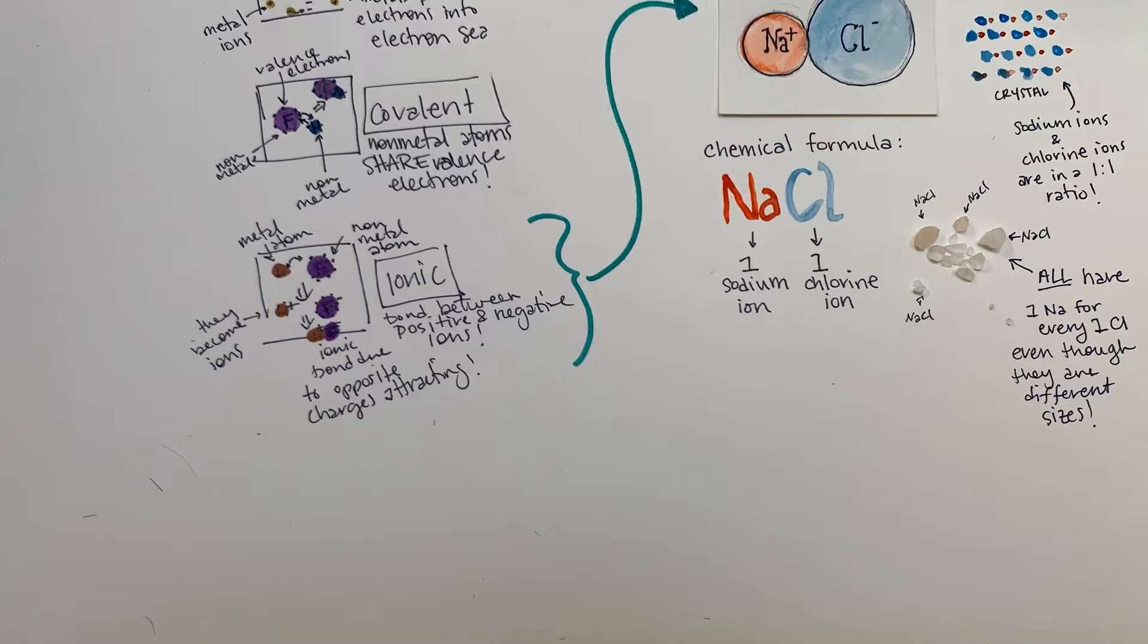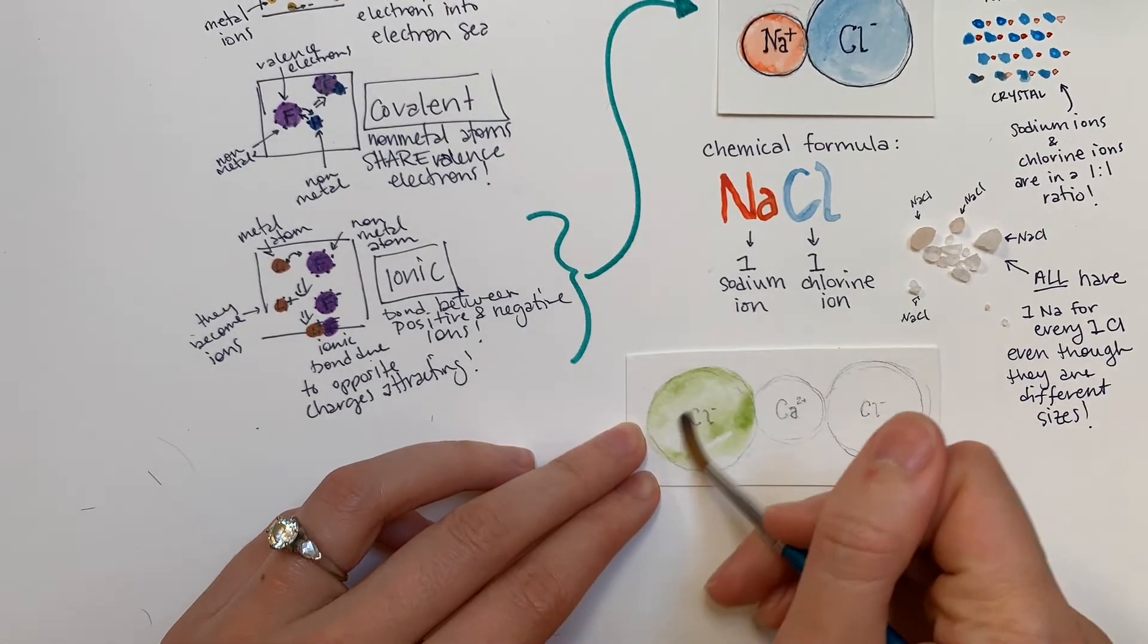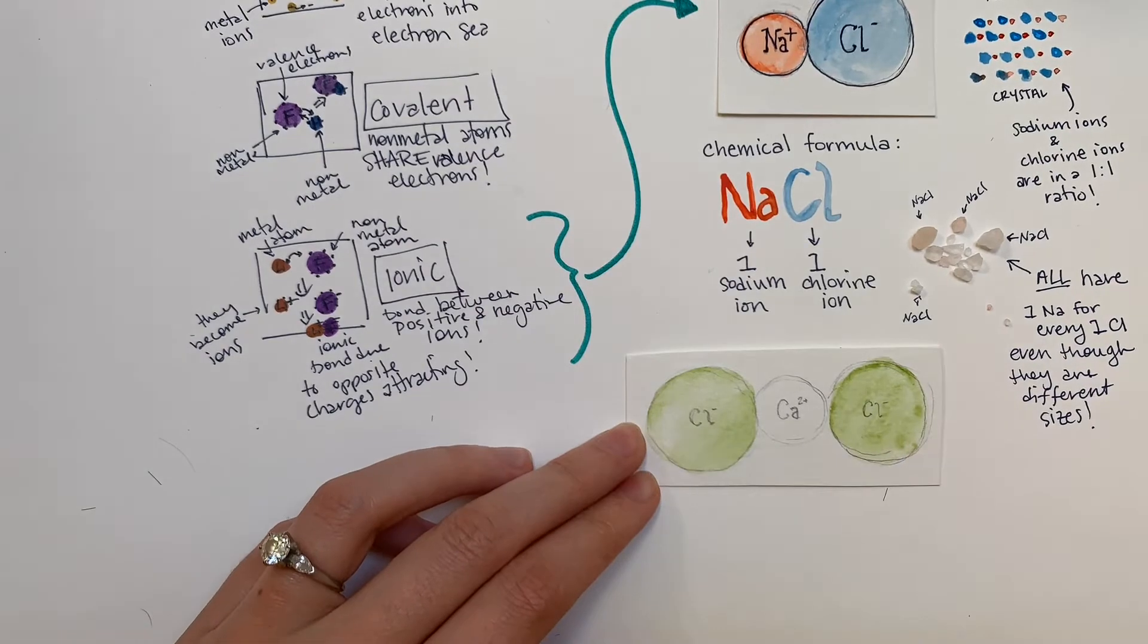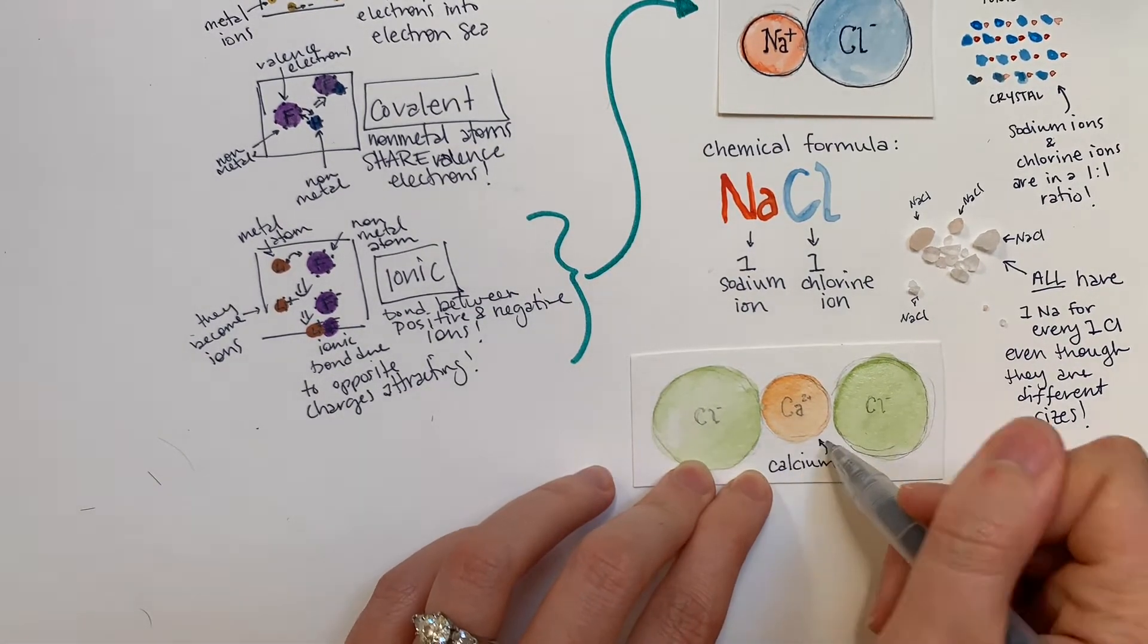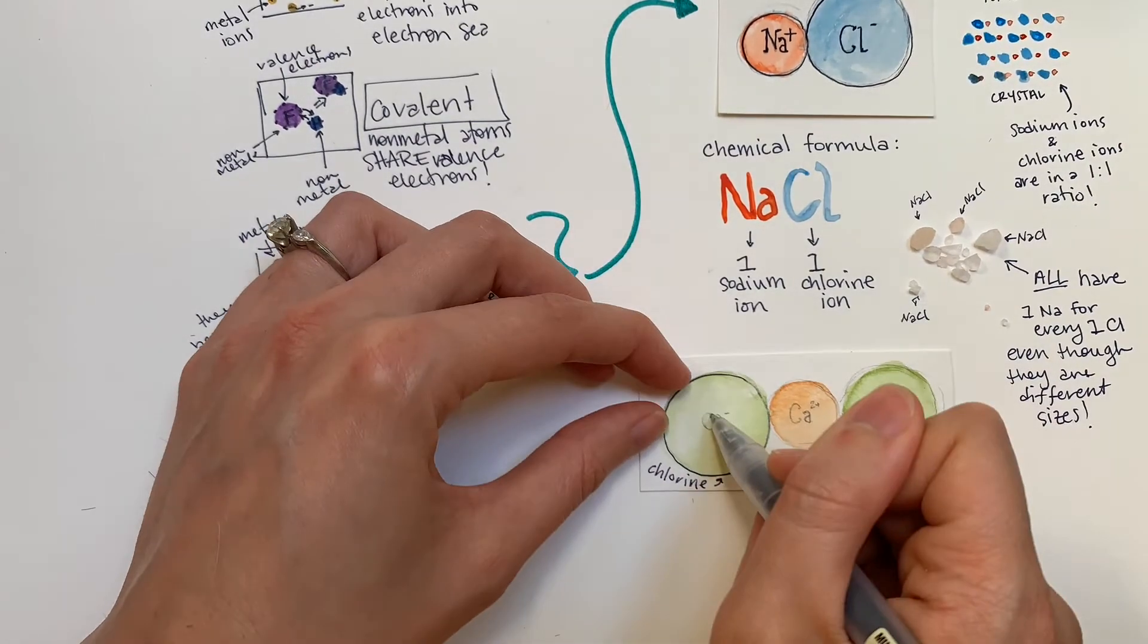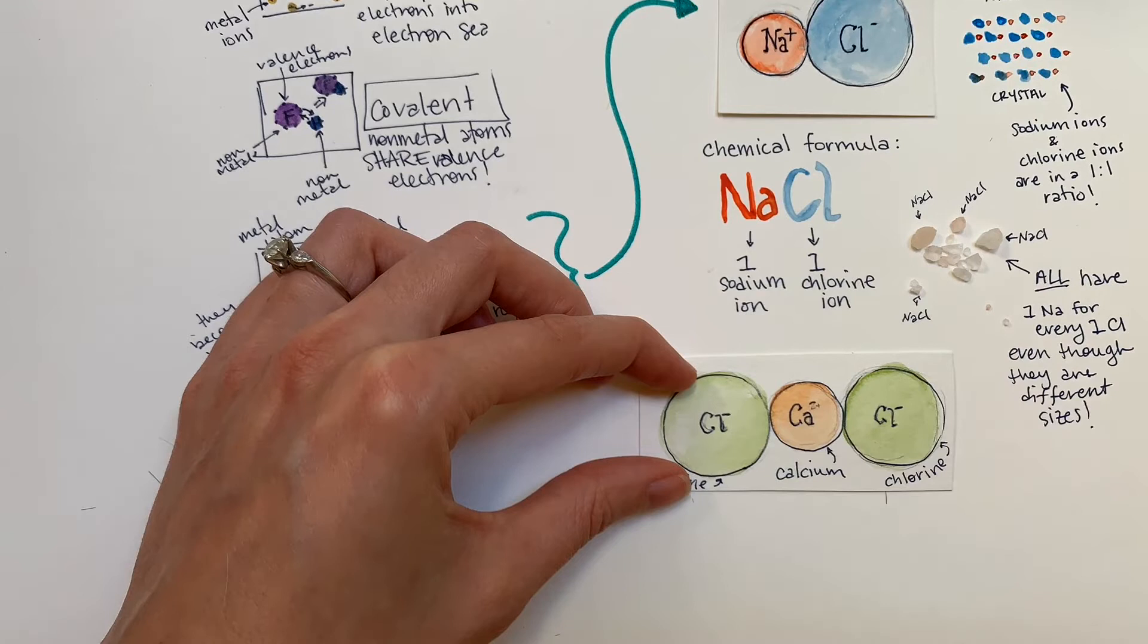Not all ionic compounds are as straightforward as sodium chloride. Some ionic compounds have more than one of a particular type of ion. Let's take a look at the ionic compound made between calcium and chlorine ions. If we look at the periodic table of elements, we can see that calcium is in the alkaline earth metals group, or column two. That tells us that it has two valence electrons and will form a plus two ion.